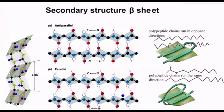In parallel beta pleated sheets, two polypeptide chains run in the same direction, and in anti-parallel beta pleated sheets they run in opposite directions. Because of this, the hydrogen bonding network in anti-parallel beta pleated sheets is stronger because the peptide bond structures are aligned in opposite directions. Whereas in parallel beta pleated sheets, the hydrogen bonds are weaker and distorted because the strands are aligned in the same direction.